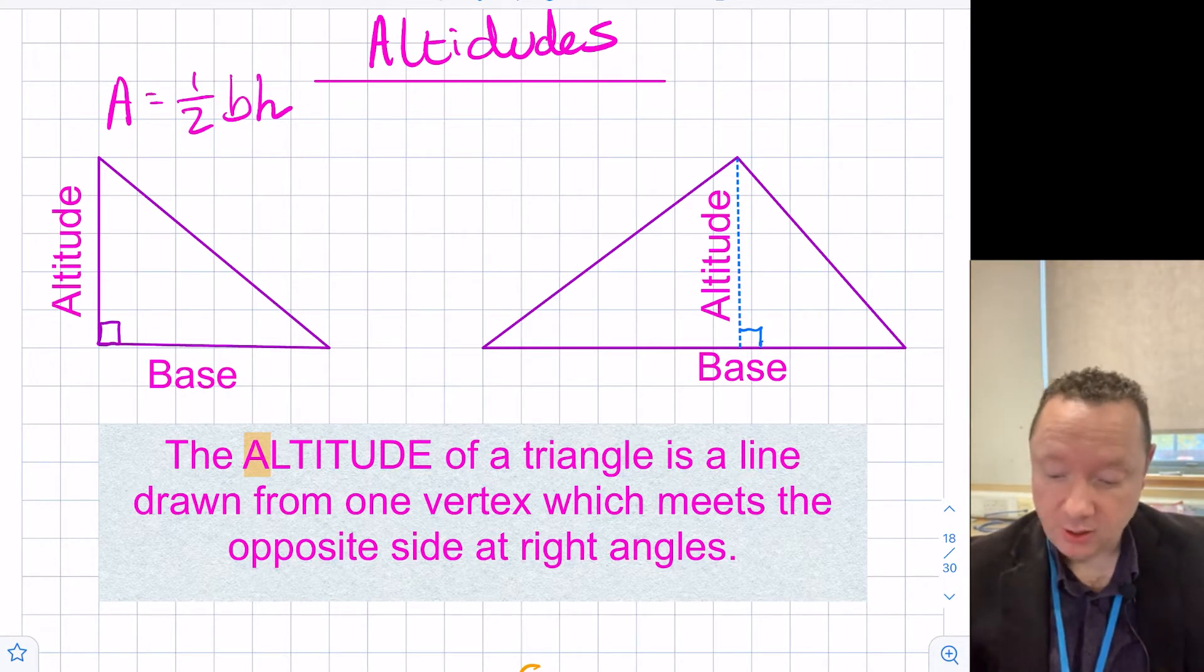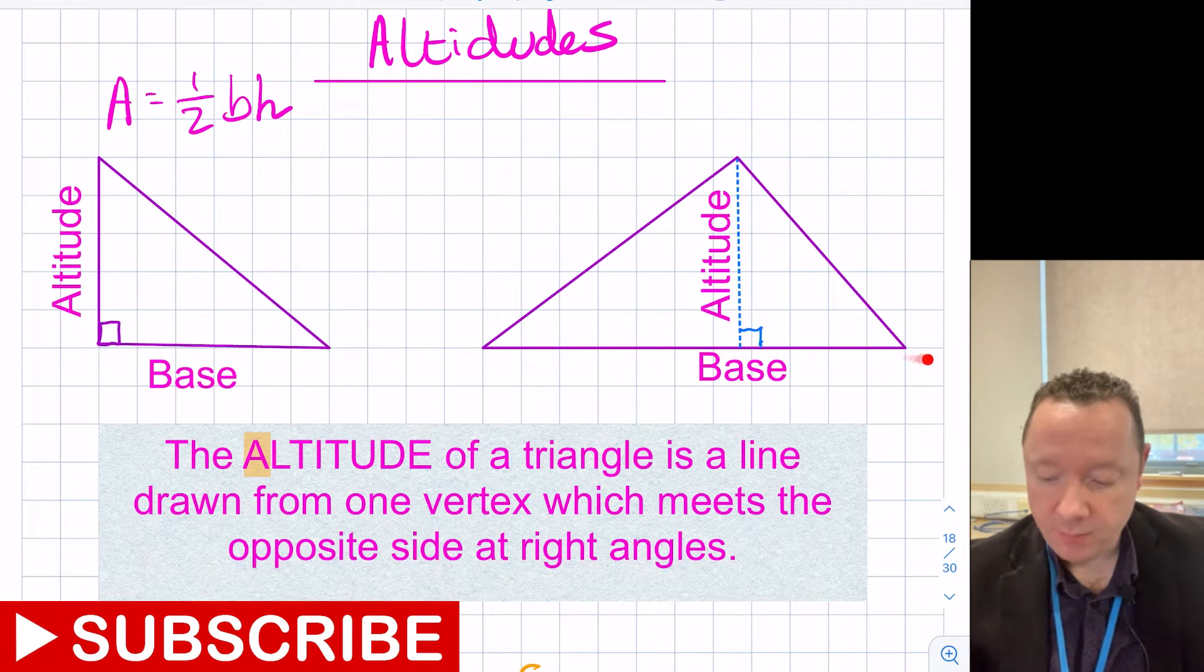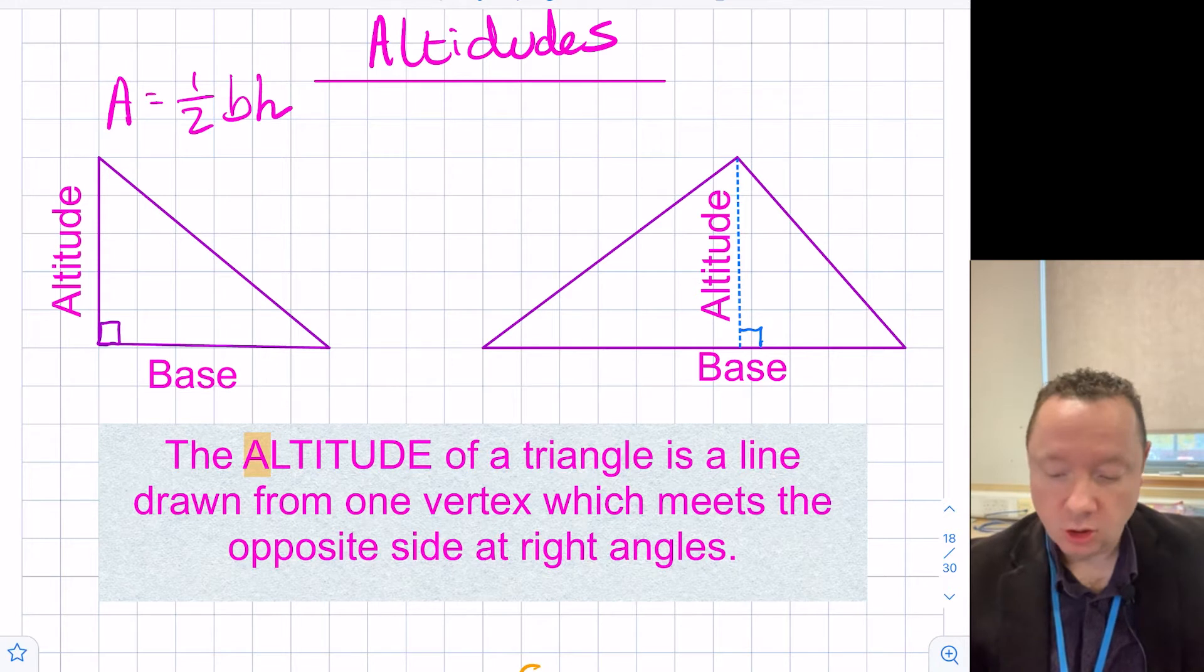Technically, if you take any triangle looking over here, a non-right-angled triangle, it would still be half the base times height for the area or we could say it's half the base times the altitude. So an altitude is basically the height of the triangle. Let's be more formal about that. The altitude of a triangle is a line drawn from one vertex, which meets the opposite side at right angles. So the word vertex is just the corner of the triangle. So if I go to any corner and draw a straight line down hitting the opposite side at right angles, that line is called an altitude.